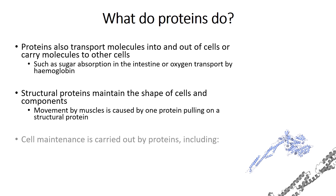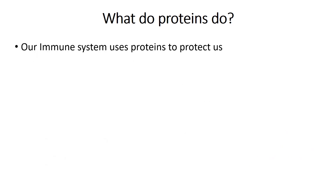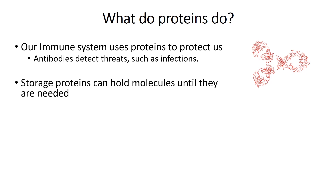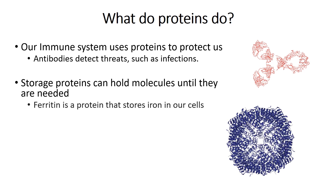Proteins are also used to maintain cells and keep them working efficiently. They can be used to produce new proteins, as seen in transcription and translation, or even to protect and repair our DNA. Proteins also protect our bodies in other ways, as they form a big part of our immune response to invading organisms. Proteins such as antibodies, an example of which can be seen in the top right, are used to detect threats to our bodies and work with our white blood cells and other systems to remove them. Proteins can also act as a storage vessel to hold certain molecules until they are needed, or because they can be harmful in large concentrations. Ferritin is an example of a protein that stores iron, which can be harmful if there is too much of it floating around in the cell's cytoplasm.